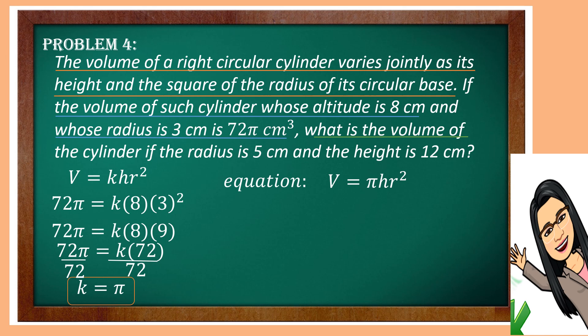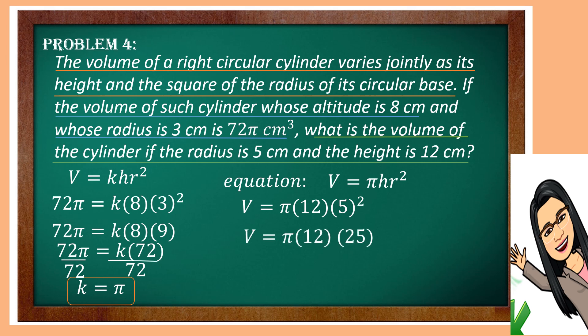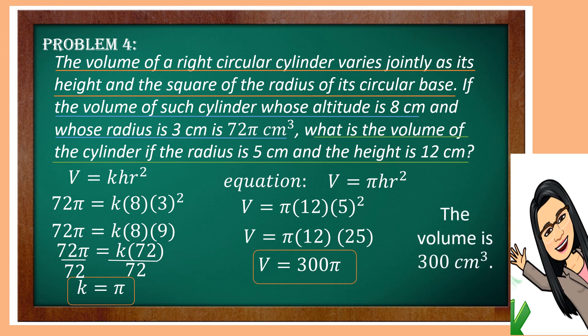What is the volume of the cylinder if the radius is 5 centimeters and the height is 12 centimeters? By substitution, V is equal to π times 12 times 5 squared. The square of 5 is 25, times 12 is 300 times π. So we have 300π. Therefore, the volume of the right circular cylinder is 300π cubic centimeters.